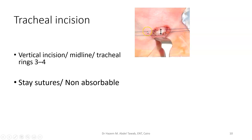Take non-absorbable sutures — for example, Prolene — and pass the needle through the tracheal wall on one side before the incision, coming in and out. Tie it equally, cut the needle, and do the same on the other side, at an equal distance from the midline. These stay sutures allow you to gently elevate the trachea to make it more superficial, facilitating the opening. If the tracheostomy becomes dislodged later, the treating team can use these stay sutures to elevate the trachea and reinsert the tube easily.